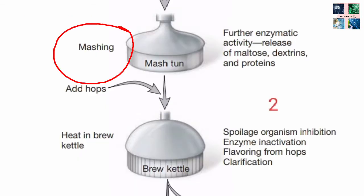The next step is mashing. The milled malt is mixed with water in the mash tun. The starch in the grain dissolves into sugar, and protein and tannins are released. The so-called malt extract is produced by the mashing process.